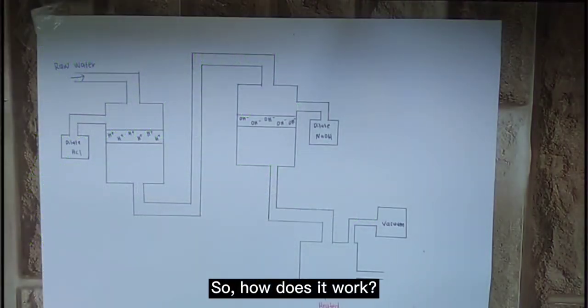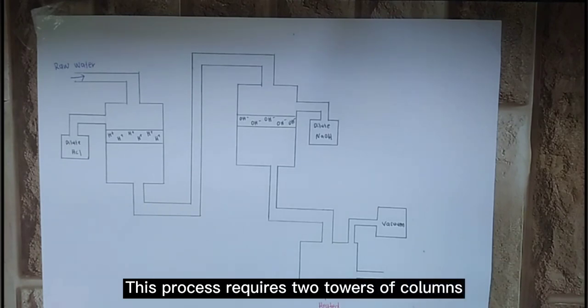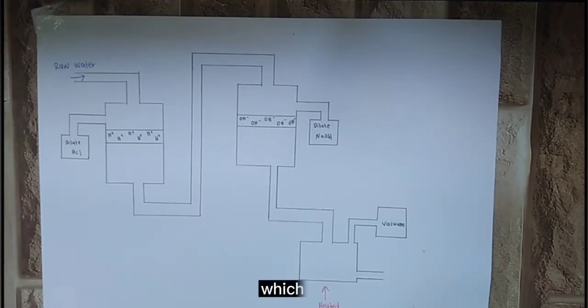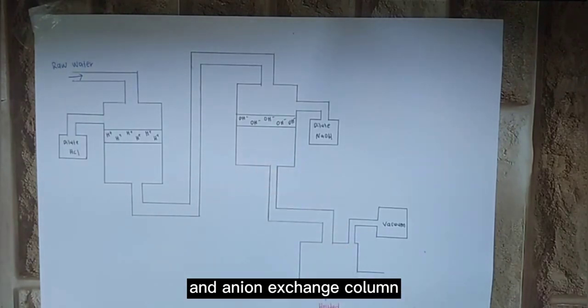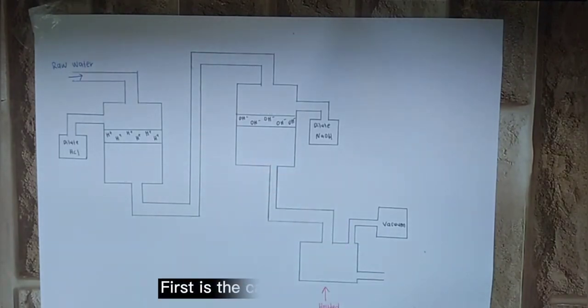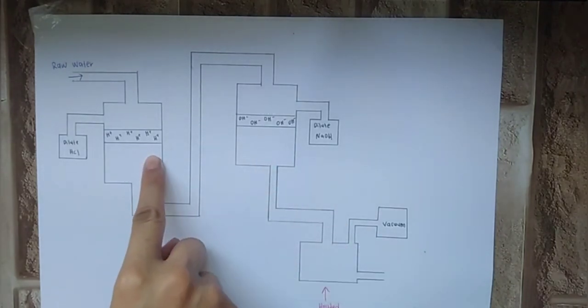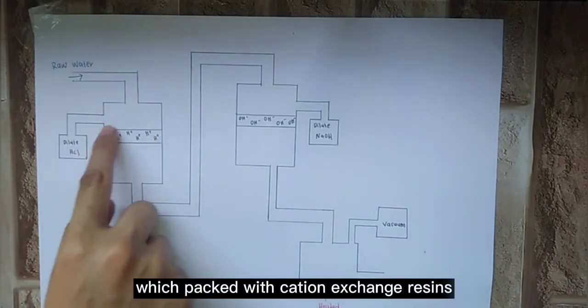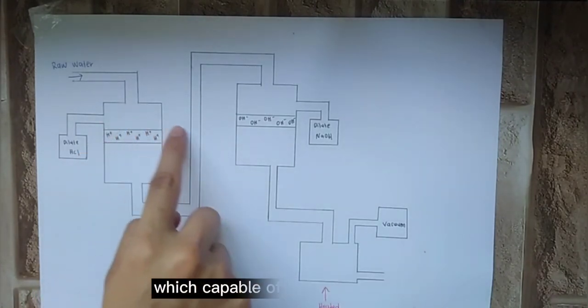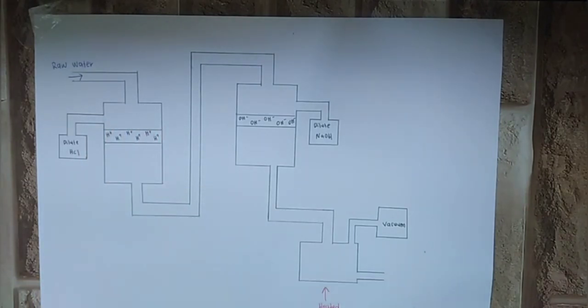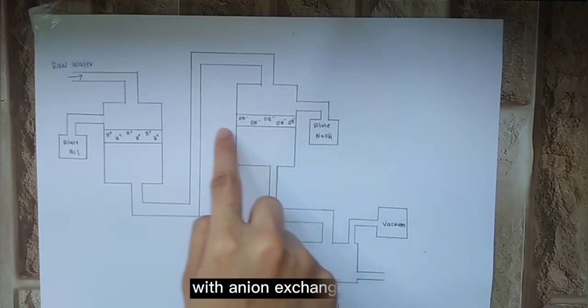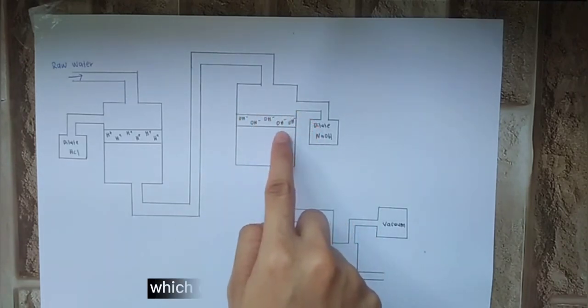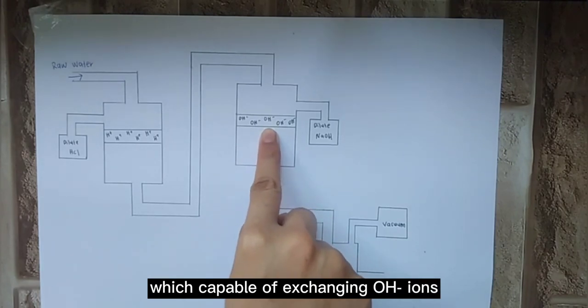So, how does it work? This process requires two towers or columns: a cation exchange column and an anion exchange column. The cation exchange column is packed with cation exchange resins capable of exchanging H-plus ions. The anion exchange column is packed with anion exchange resins capable of exchanging OH-minus ions.